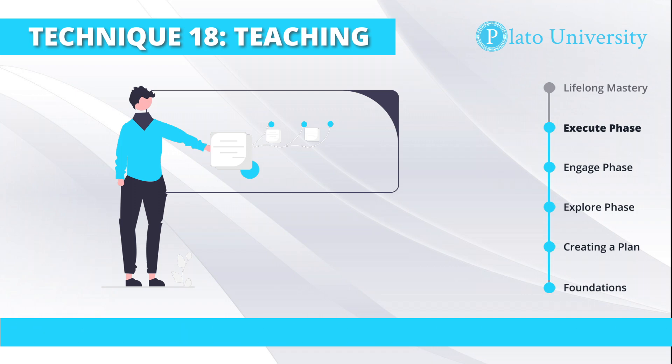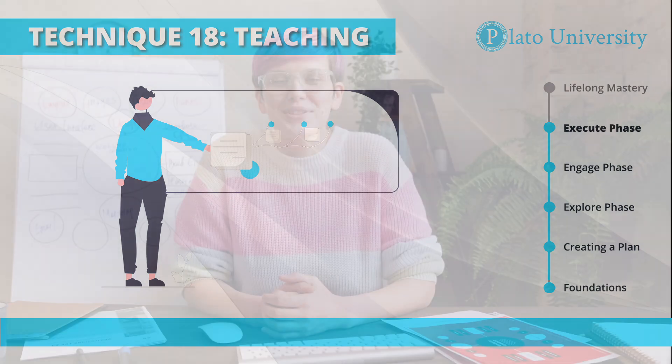Beyond that, teaching a subject to someone who knows less than we do presents unique challenges and opportunities for us as learners. Other people learn in different ways — they have different curiosities and levels of understanding. Teaching them requires us to take a more thorough and comprehensive approach to our own learning. We're forced to imagine new and alternative ways to understand a subject, and then create simpler, more creative ways to transmit that to other people. This process of dissecting a subject well enough to explain it results in a much deeper understanding among those who teach.